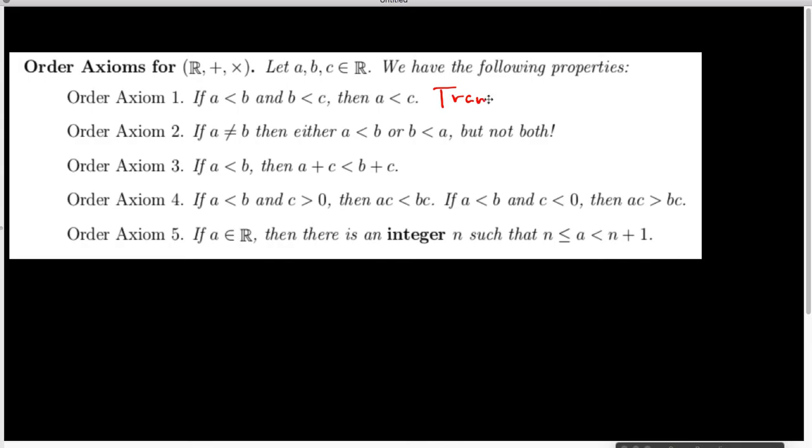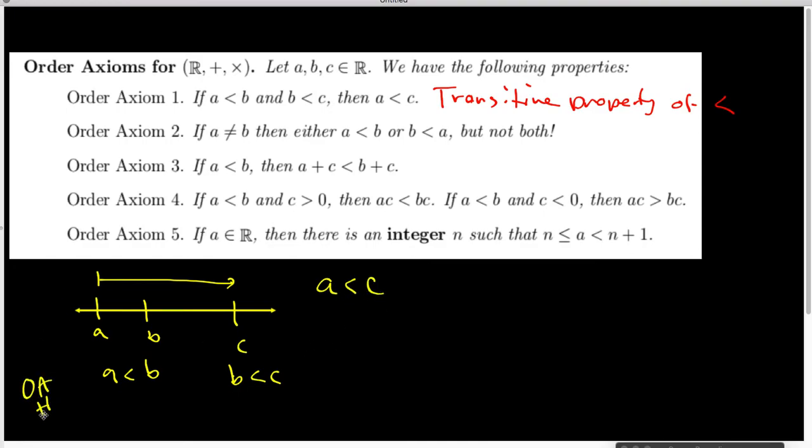This is frequently called the transitive property of less than. And it's easy enough to see why that one is obviously true if I draw a number line and we look at A is here and it's less than B and B is less than C, so that makes C out here. And since A is here and I have to go that way to get to C, A is clearly less than C, so this is order axiom number one.